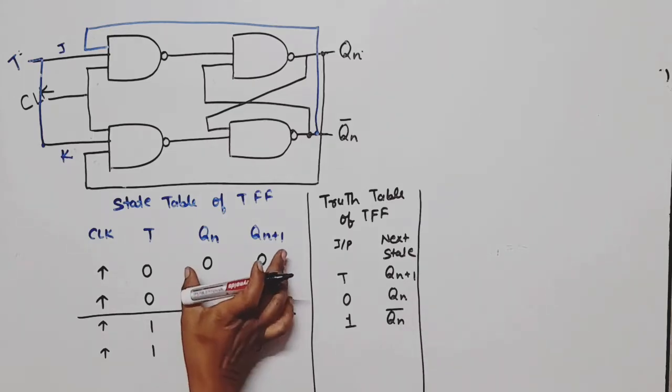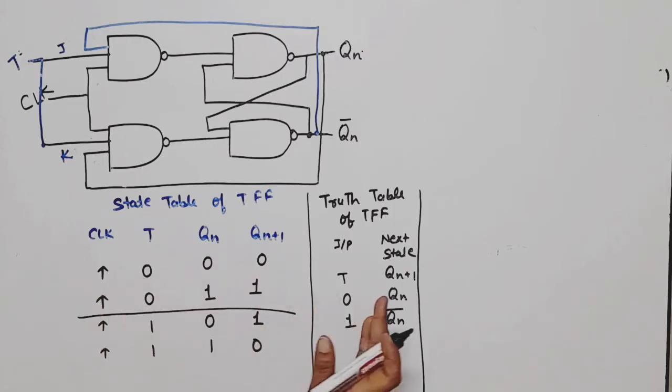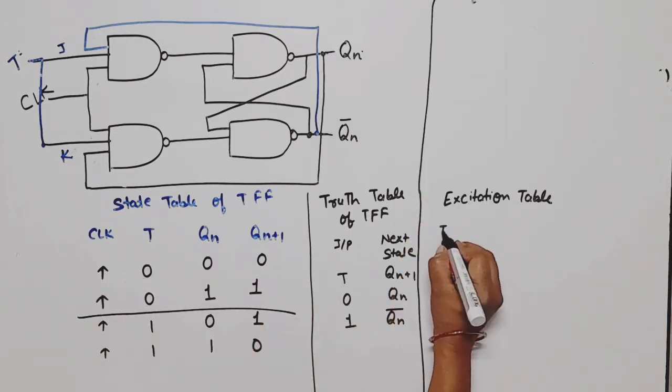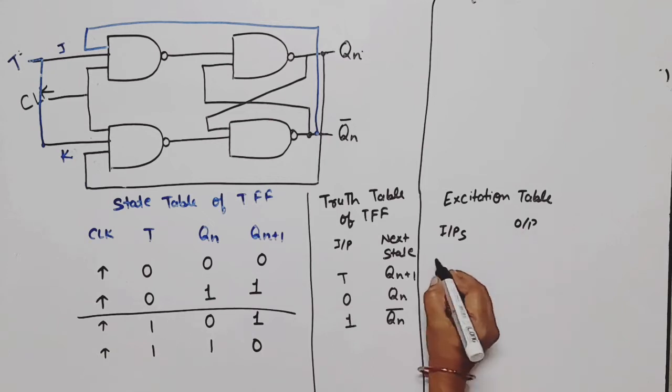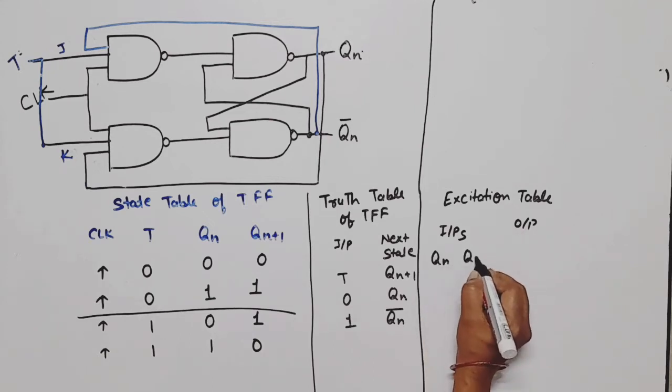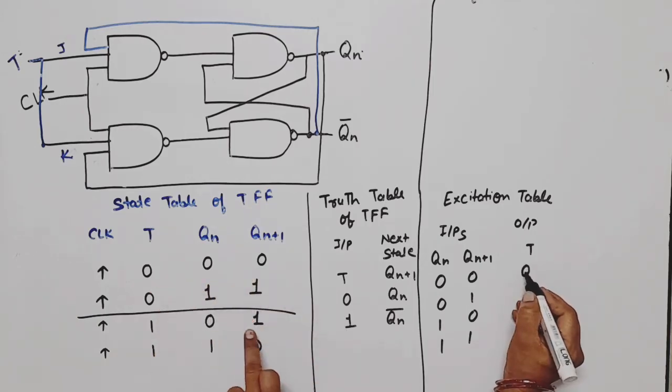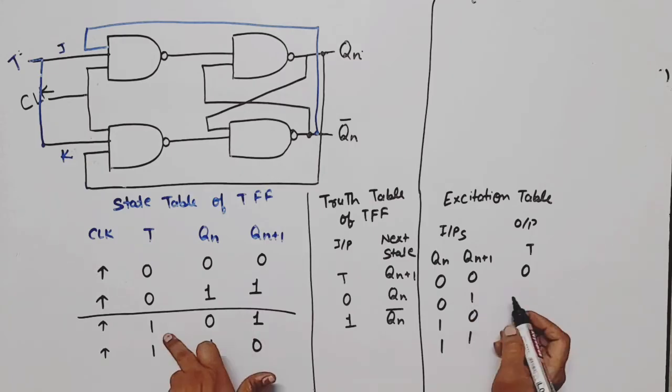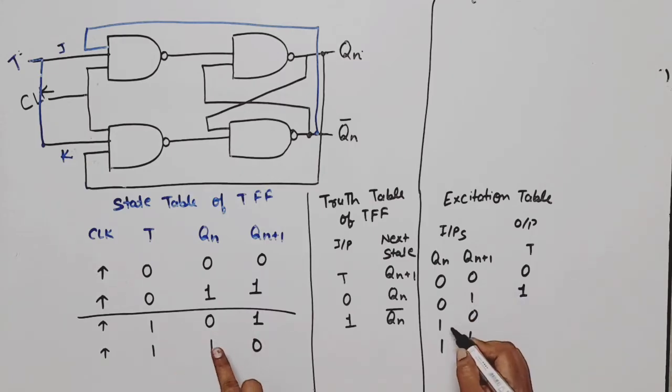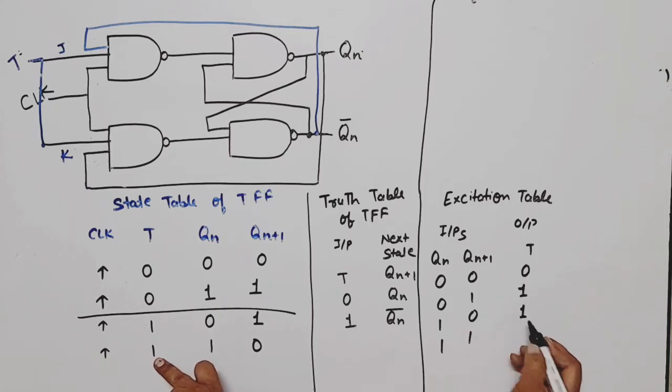Excitation table - what happens in excitation table? Present state and next state are input side, and T value is output side. Input will be present state and next state. What will be T? Now two bits give four combinations. When changes are happening, T value is one. Zero to one means present state is zero, next state is one, T value will be one. If present state is one, next state is zero, T value will be one. If both are zero, meaning present state and next state both zero, T value will be zero. If both are one, T value will be zero. So this is the excitation table.